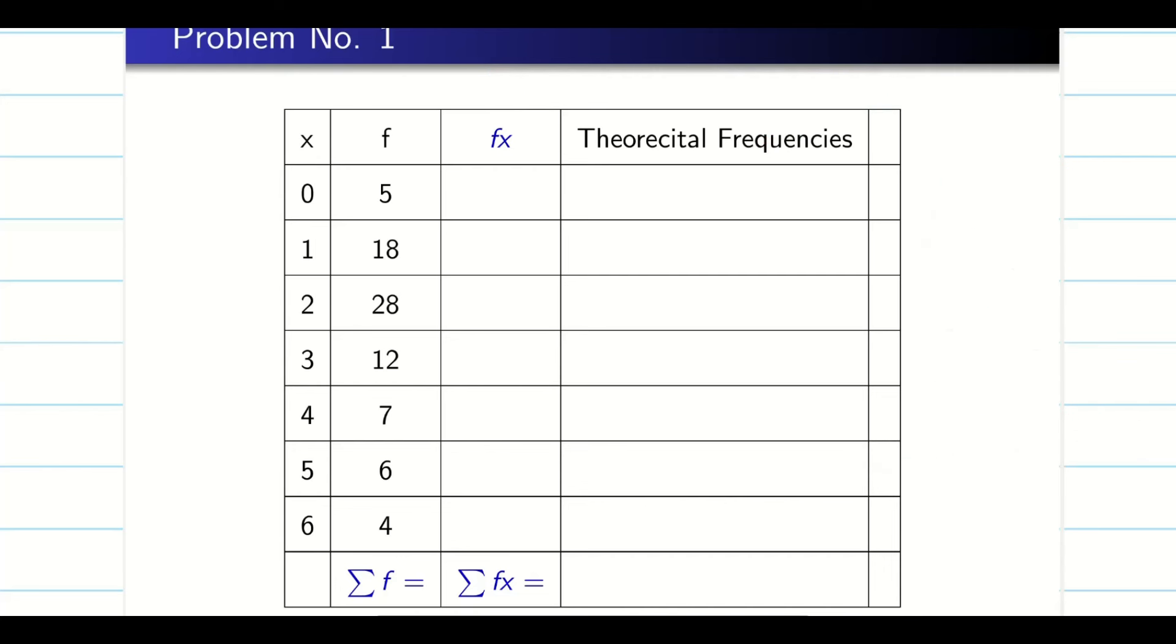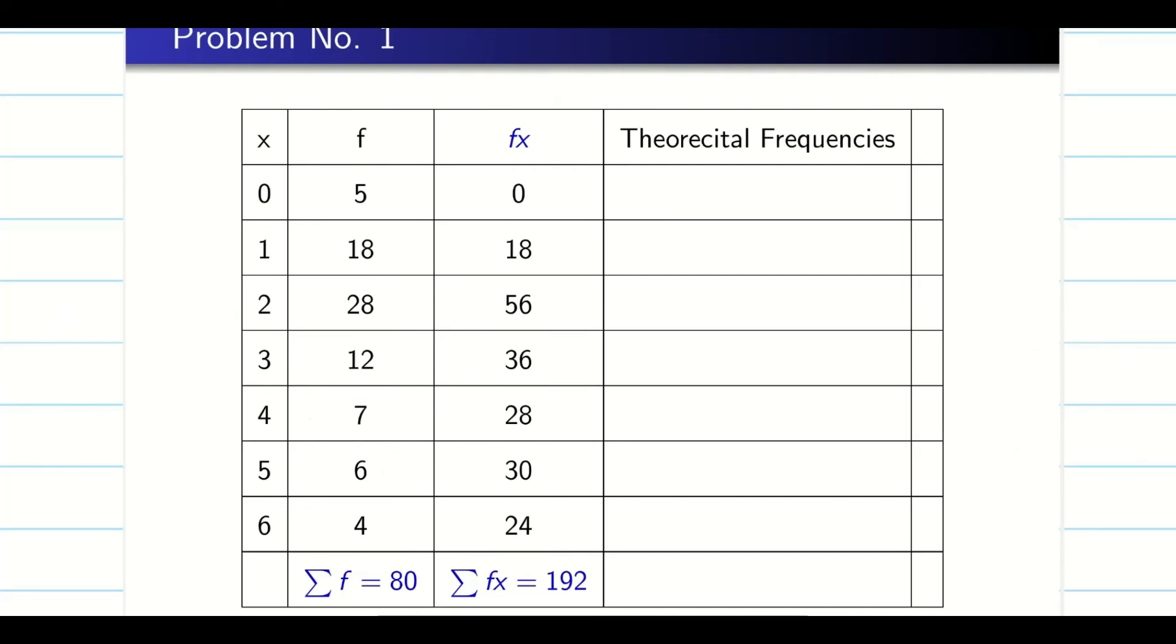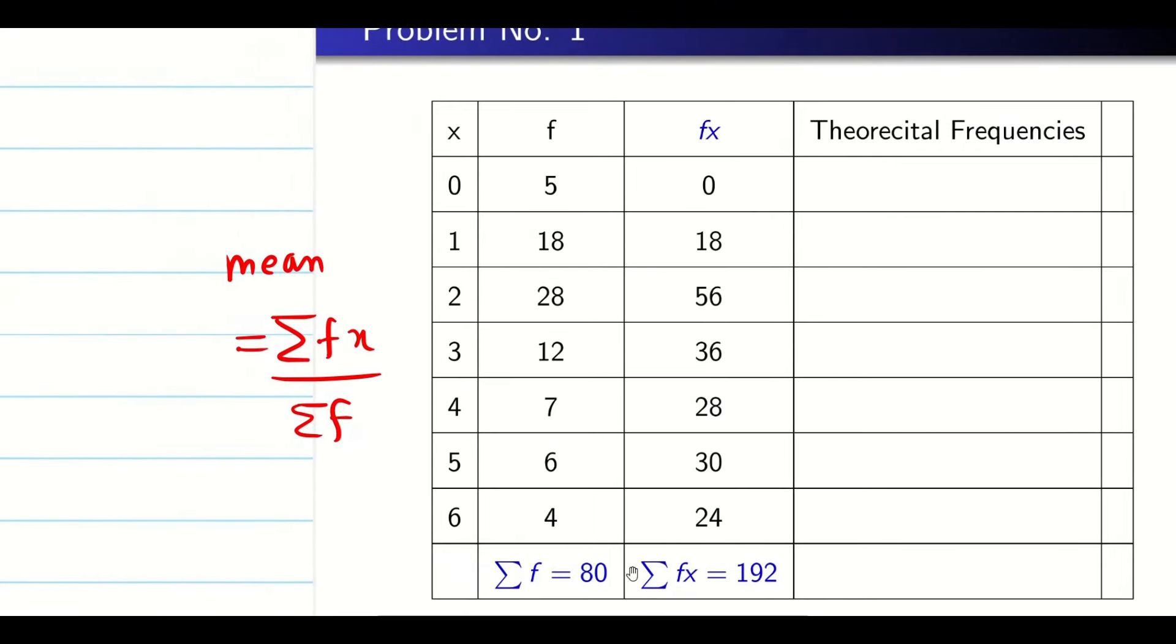Let us do the job. So now when I multiply and add, I will find my mean very easily. My mean is summation Fx by summation F. So what can I find from here? It's very simple. It's going to be 192 divided by 80 guys. So my mean is going to be 2.4 guys.